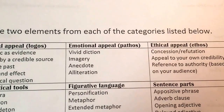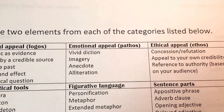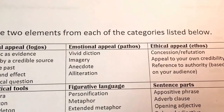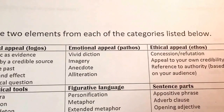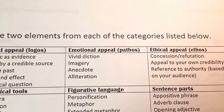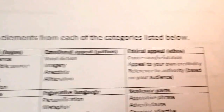Then you need to do two from the emotional appeal category: vivid diction, imagery, anecdote, or alliteration. So two from that category.